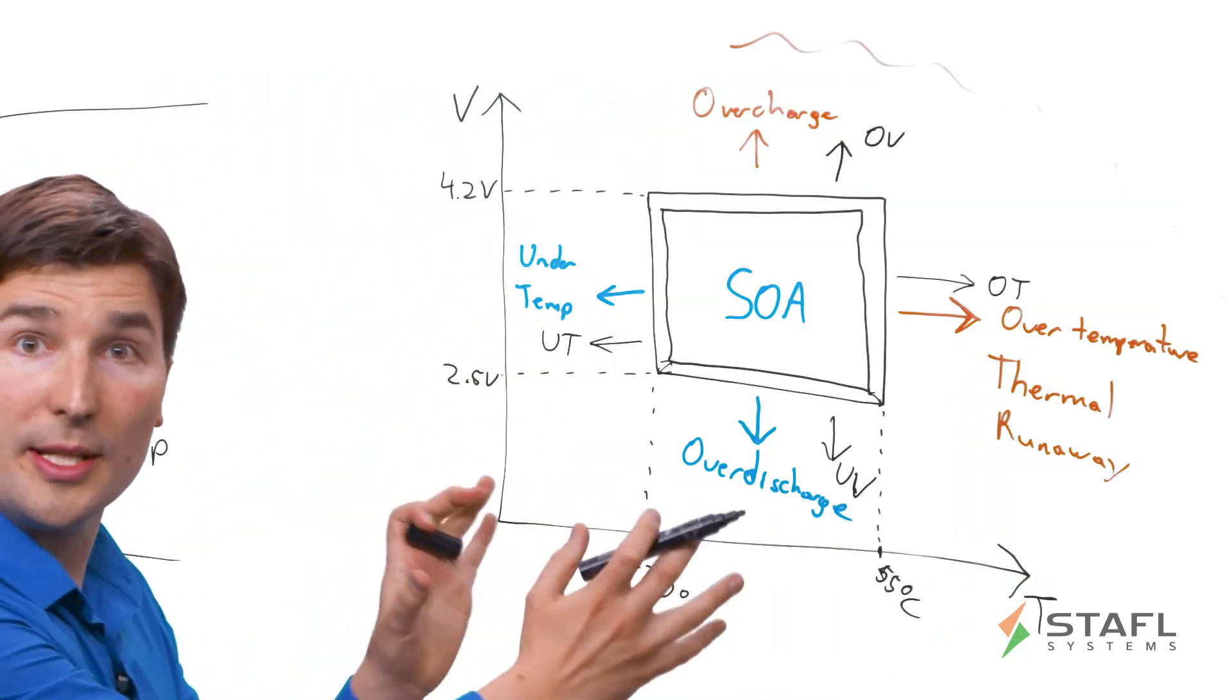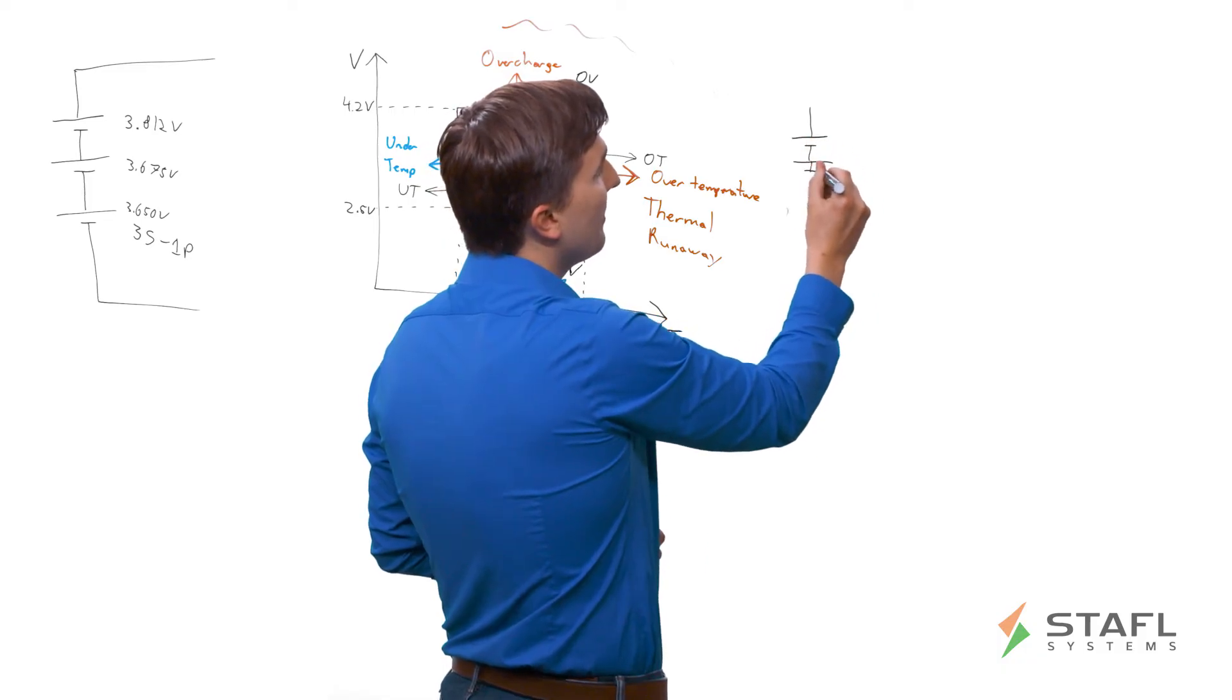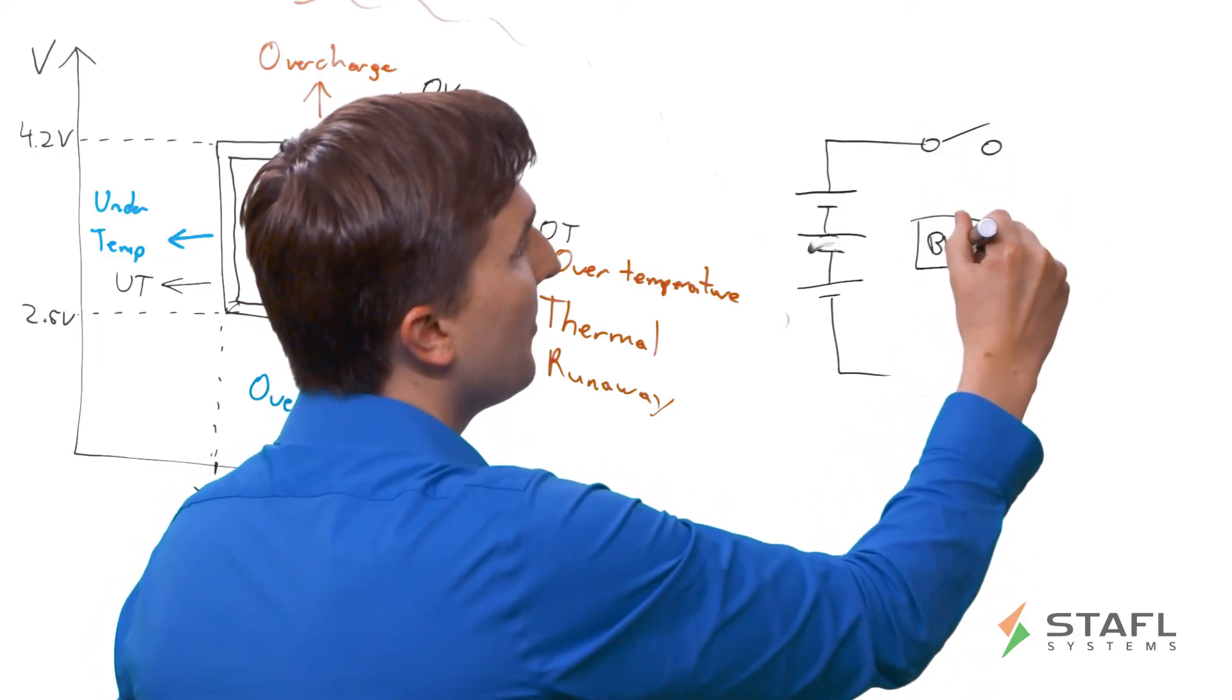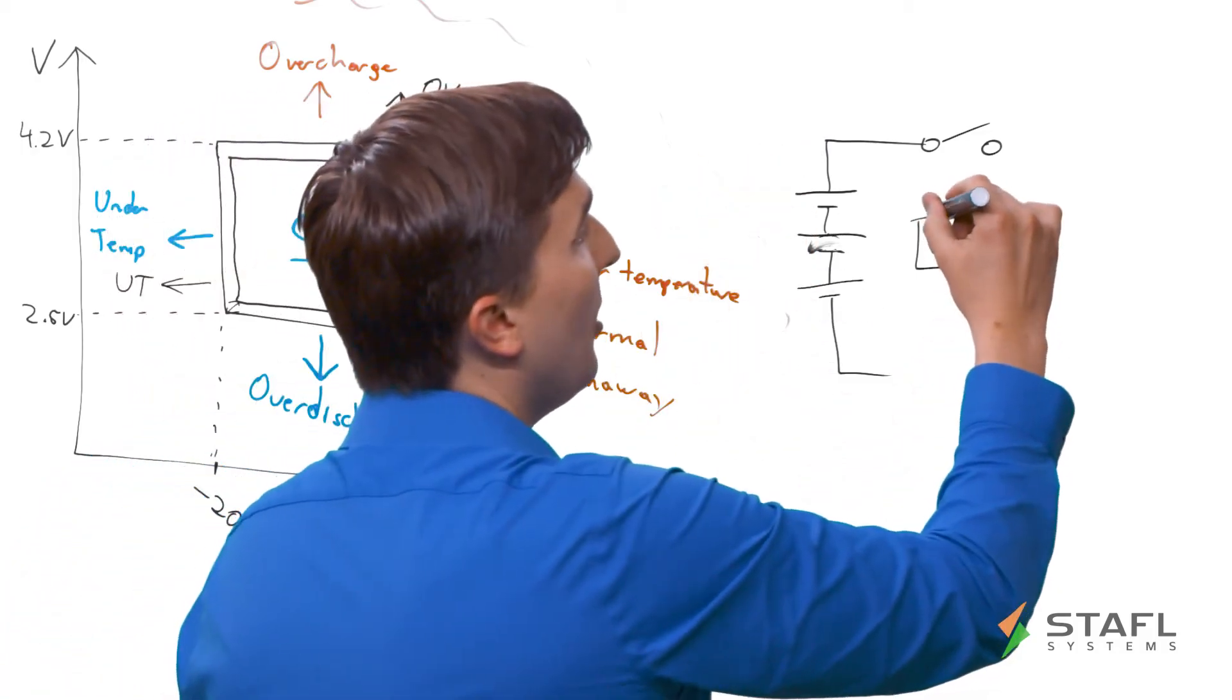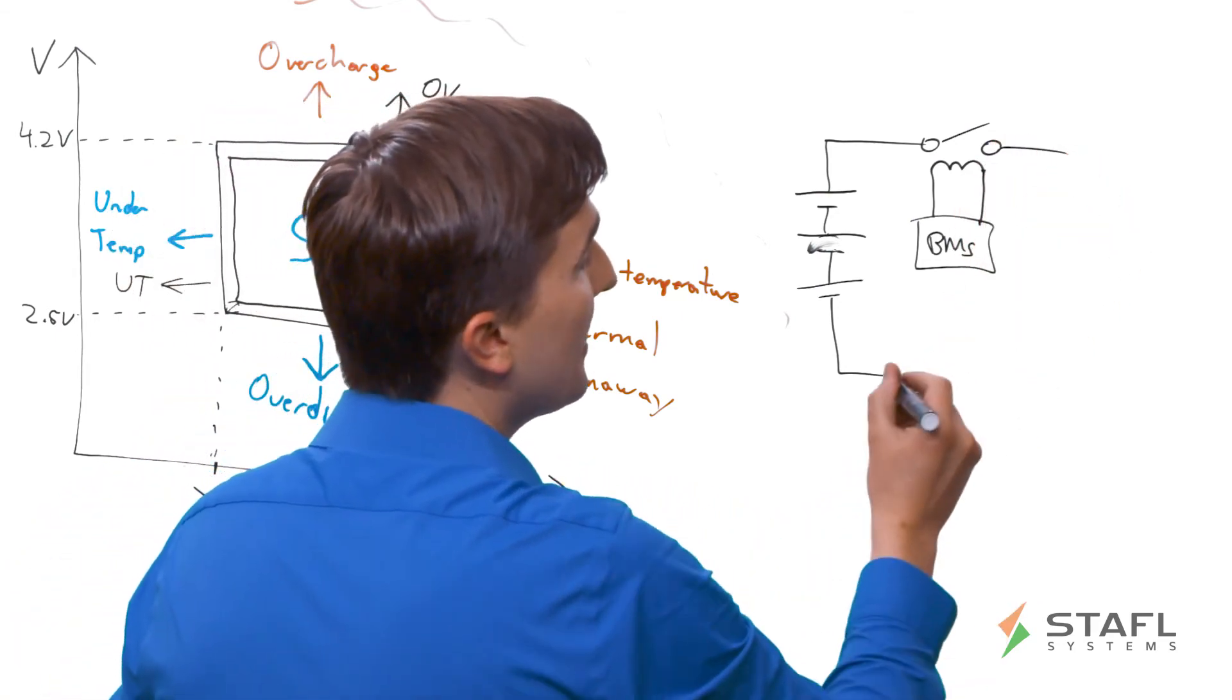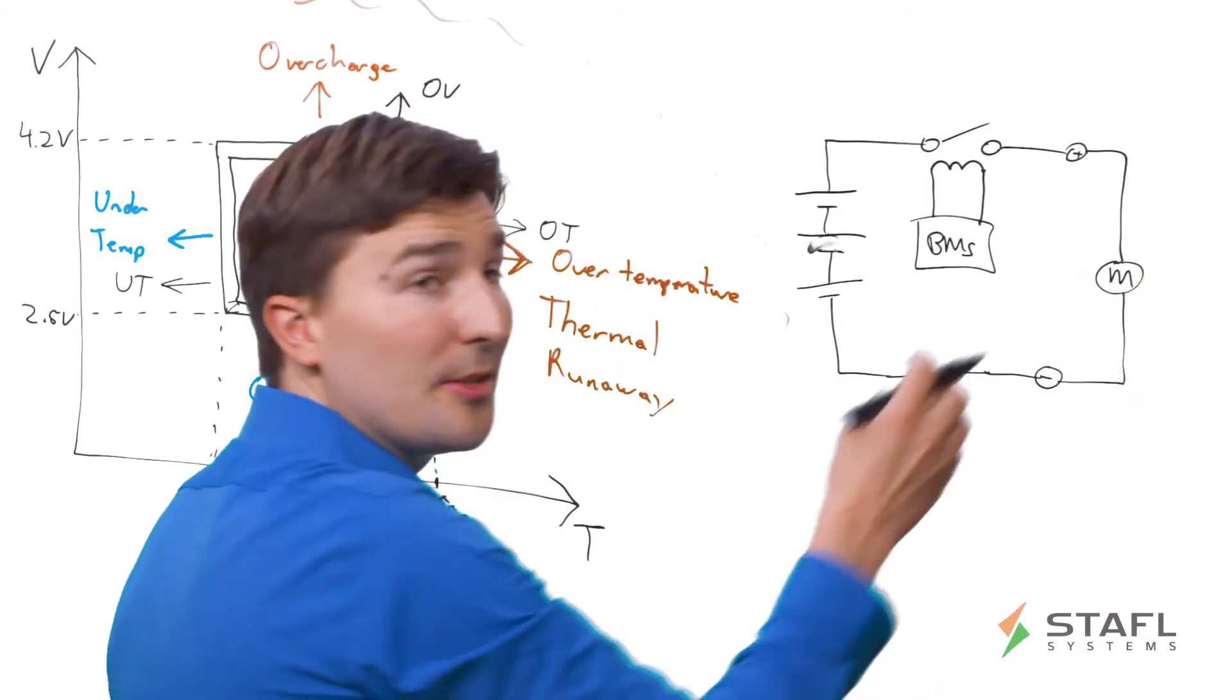So how does the BMS actually communicate this to the rest of the system? Well, just drawing a quick diagram over here, say we have a scenario where we've got our three cells connected in series here. We've got a disconnect switch and our BMS. The BMS is monitoring these conditions, the voltages, the temperatures, and the current. But it also is controlling this disconnect relay, contactor, or solid-state switch. And this allows the BMS to disconnect itself from the external application in case the external application is malfunctioning.